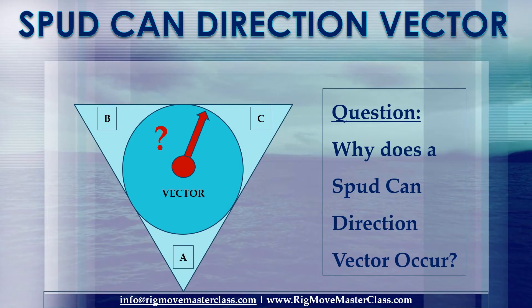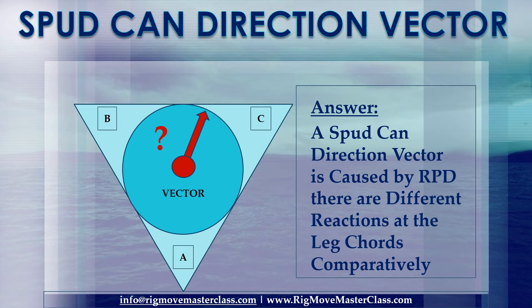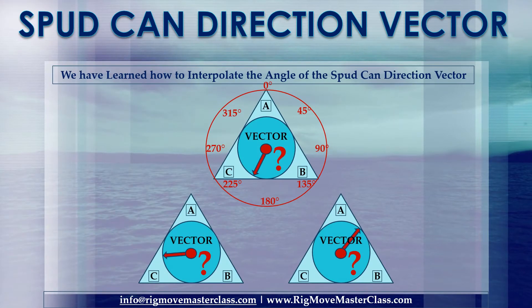Question: Why does a spud can direction vector occur? Answer: A spud can direction vector is caused by RPD; there are different reactions at the leg chords comparatively. We have learned how to interpolate the angle of the spud can direction vector.